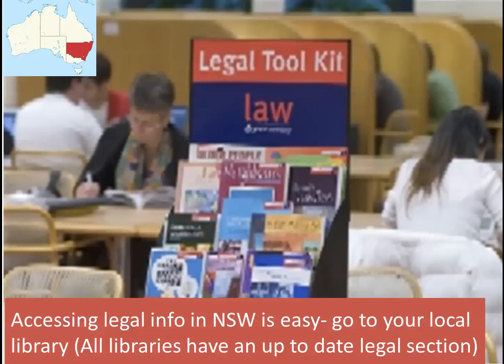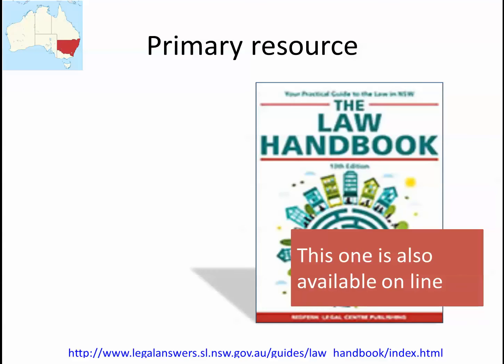You can also get the law handbook online — it used to be put out by Redfin Legal Centre, though that may have changed. It's up to about its 13th edition, put out every two years, so it's been going for at least 26 years, constantly updated. If you're in a workplace in New South Wales, I recommend your organisation buy a copy — it costs something like 80 dollars. But you've got to train them to say in two years we need to throw that out and get the latest copy.